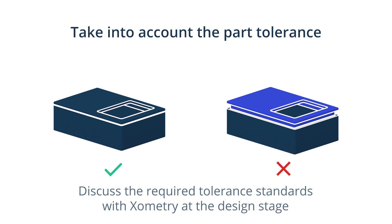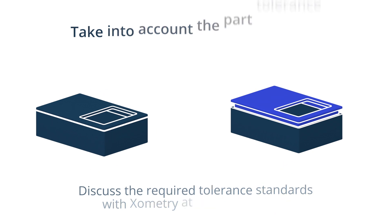For example, DIN 16901 contains a general tolerance table as a reference for different materials. If your supplier uses the standard and you need tighter tolerances or other standards, they will ask you to provide 2D drawings.